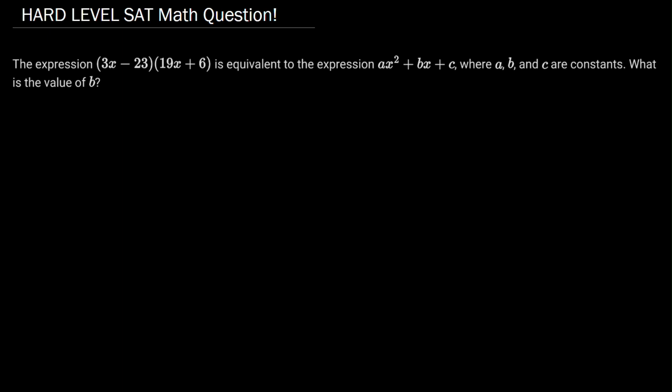Hey everyone, we're back with another hard-level SAT math question. In this one, the expression (3x - 23)(19x + 6) is equivalent to the expression ax² + bx + c, where a, b, and c are constants. What is the value of b?